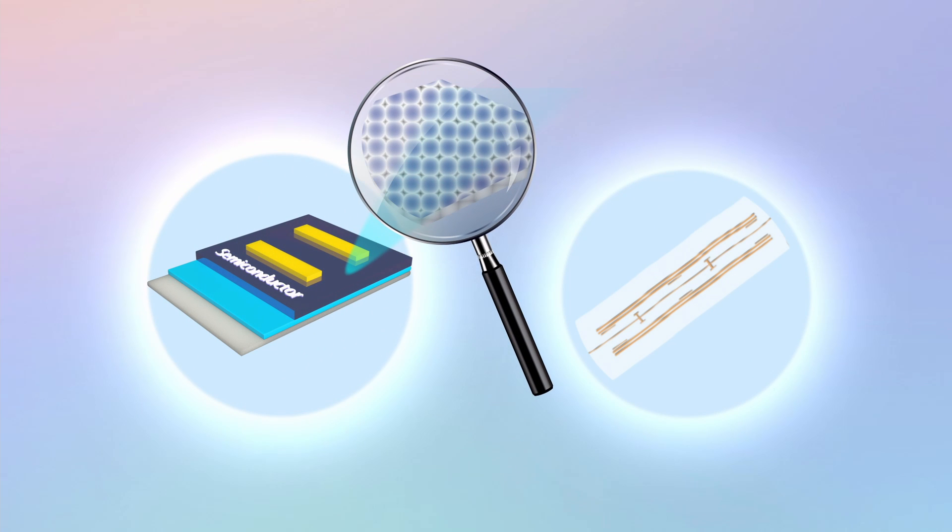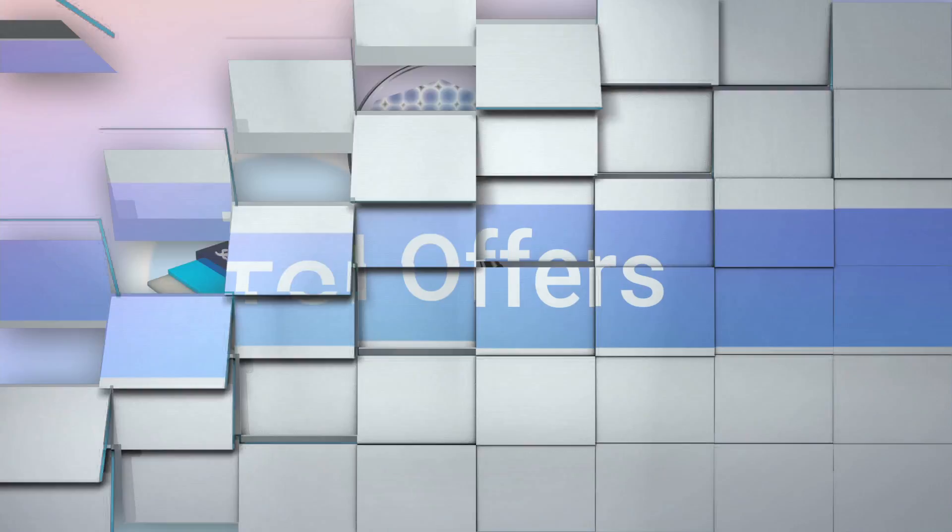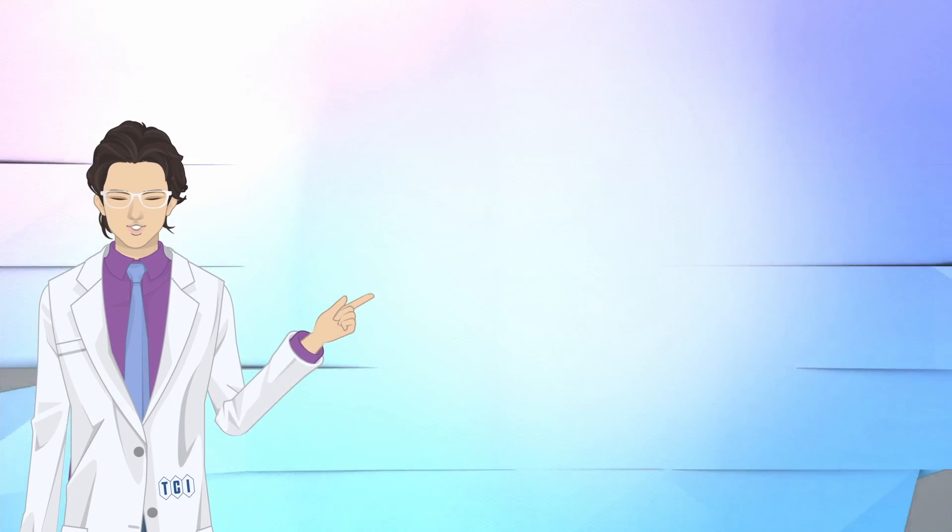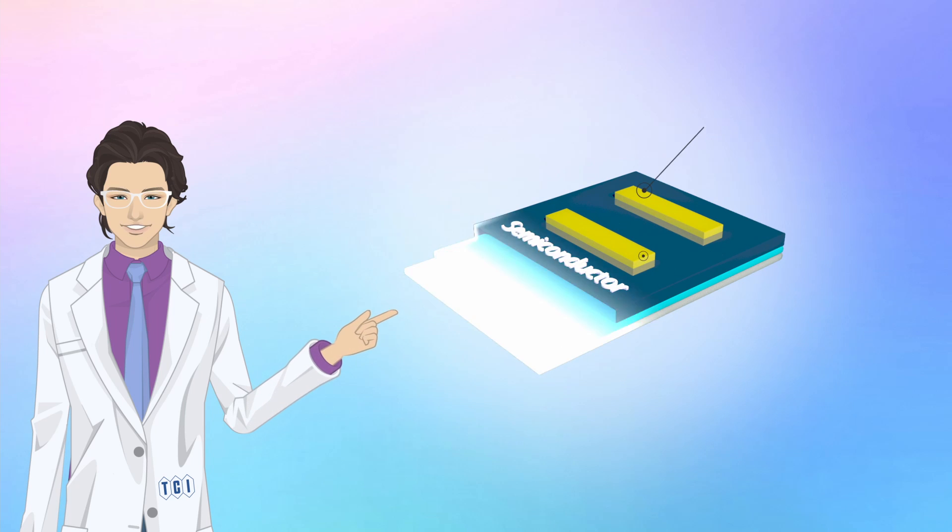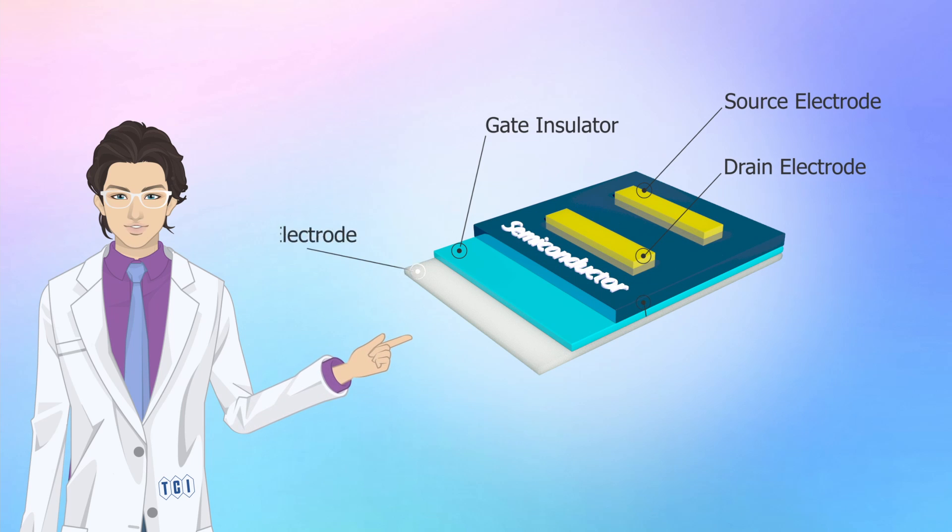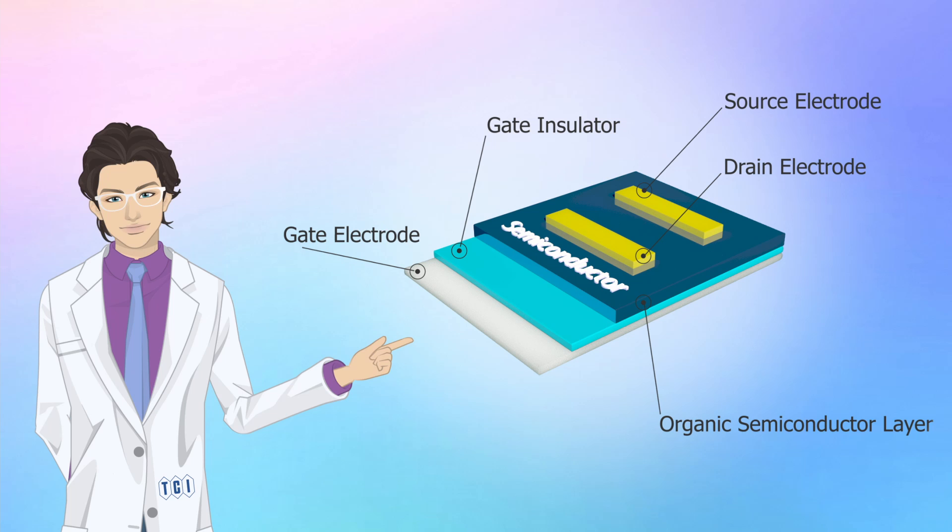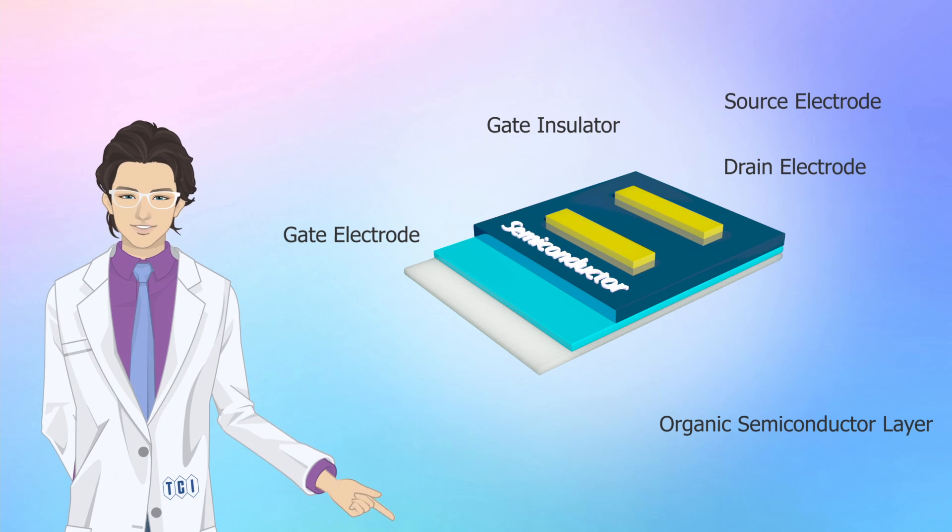Organic semiconductors have been receiving much attention as promising materials for printed electronics owing to their flexibility and solubility. TCI offers several specialty chemicals of guaranteed very high quality for these purposes, including typical and cutting-edge semiconducting materials utilized for organic field-effect transistors.